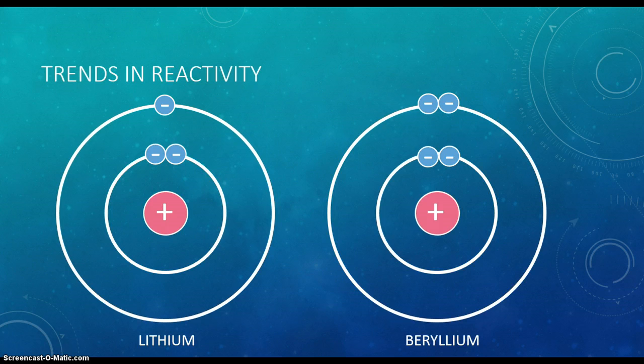In conclusion, the more electron shells, the more reactive a metal is, assuming the number of valence electrons stays the same. Also, the more valence electrons an atom has, the less reactive a metal is, assuming the number of electron shells stays the same.